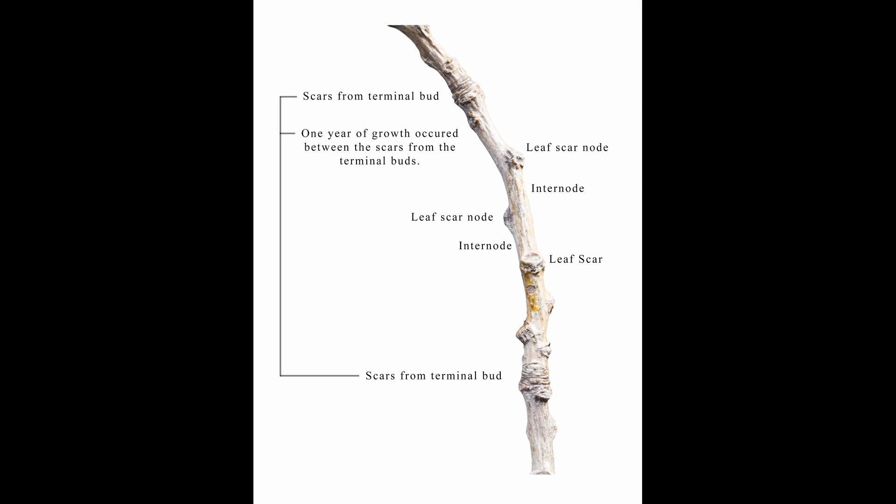Buds may be covered in protective scales. The terminal bud scales may leave scars on the stem when they fall off. The distance between the sets of terminal bud scars can show how long a stem grew in one year.